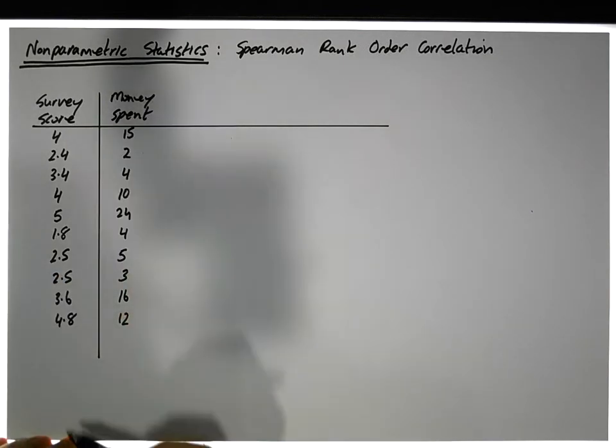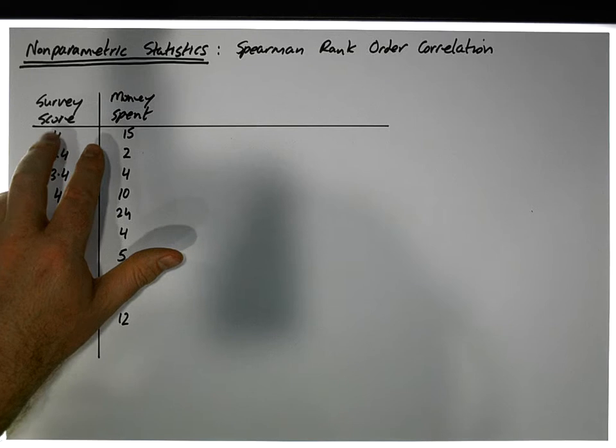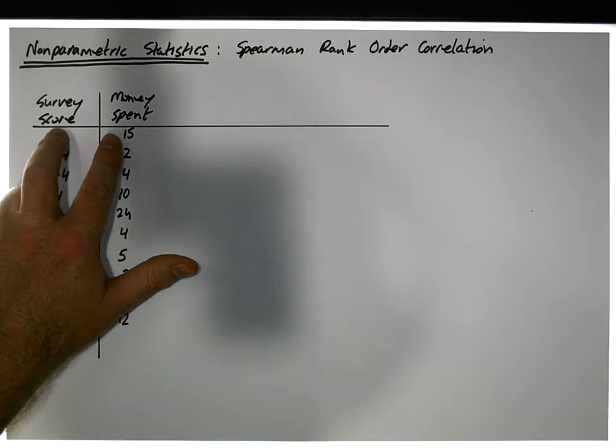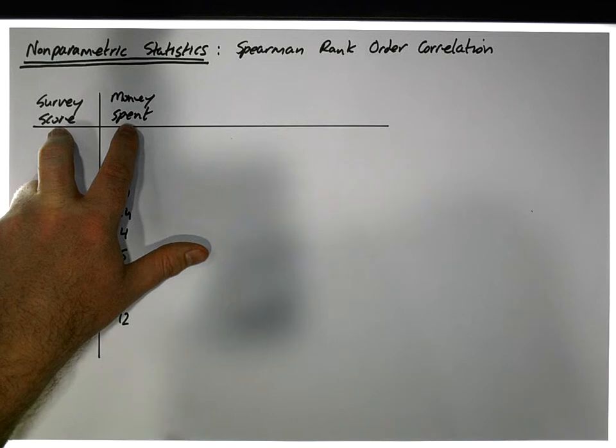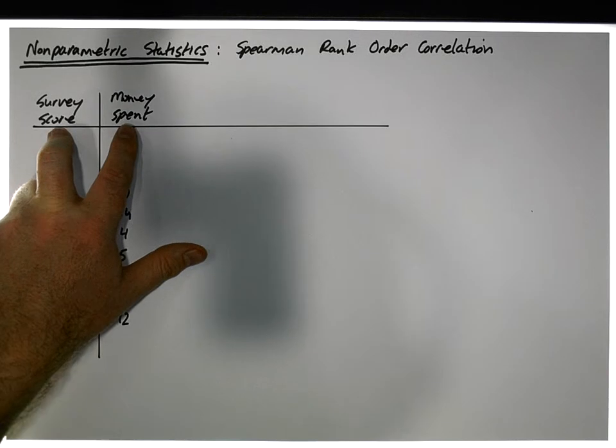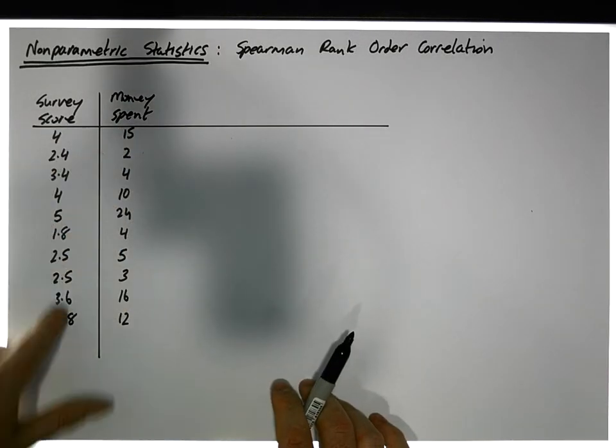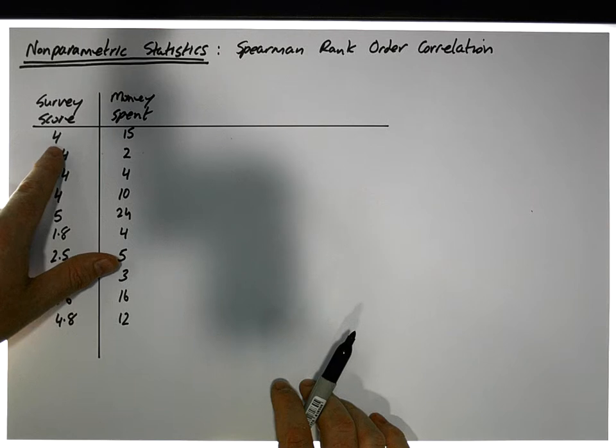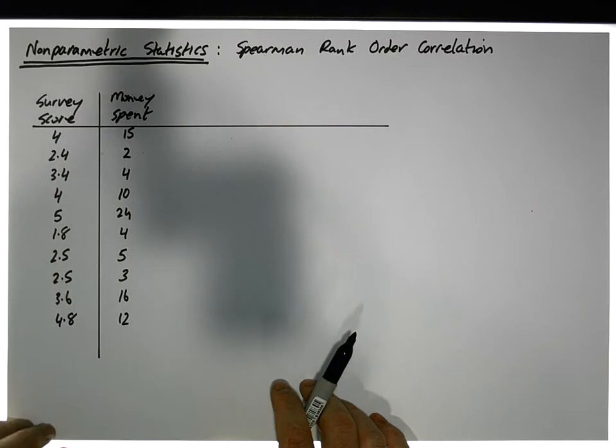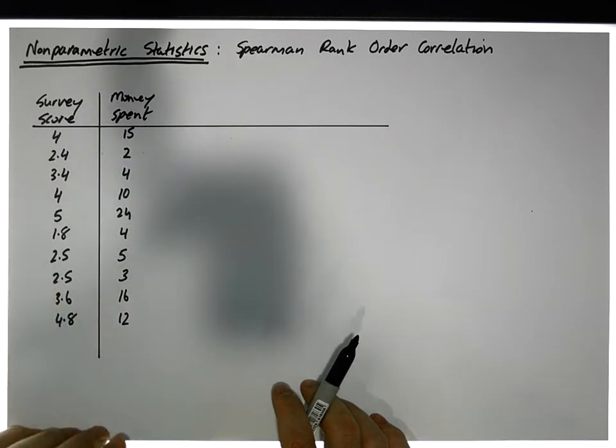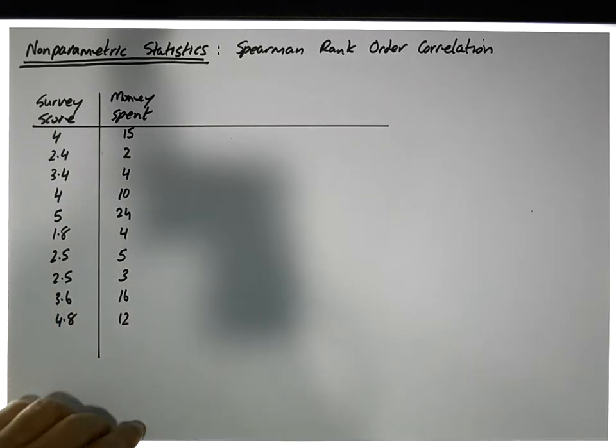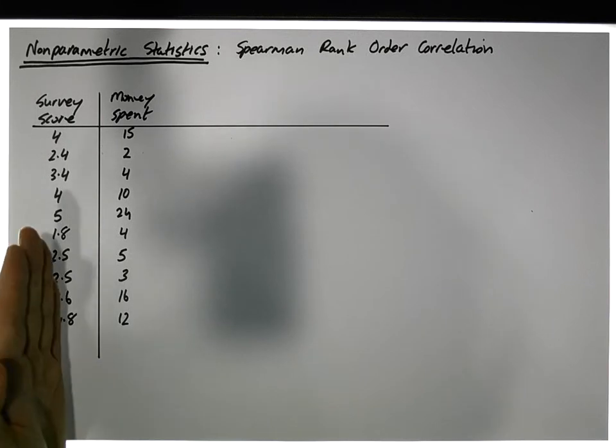In this example here, I have two variables. I have an individual survey score and I have how much money they spent for lunch, just a fictitious example. But with respect to the survey score, the survey scores are actually ordinal values. They are the average of ordinal items, so hence they don't meet the criteria in relation to the Pearson correlation coefficient. They are measured on an ordinal scale, not an interval ratio scale.